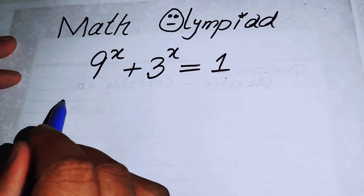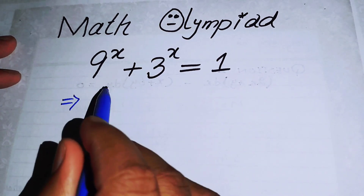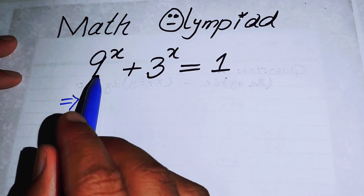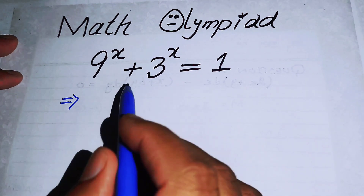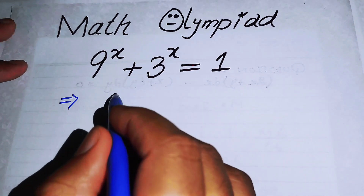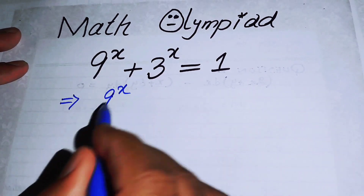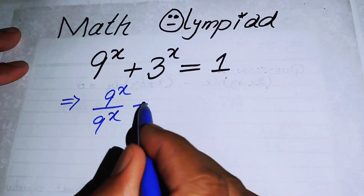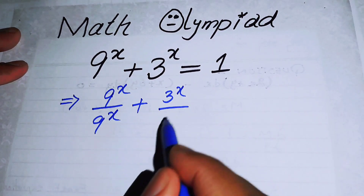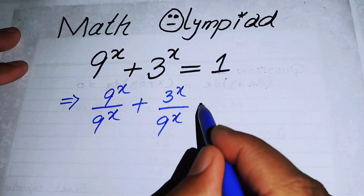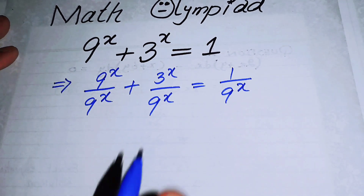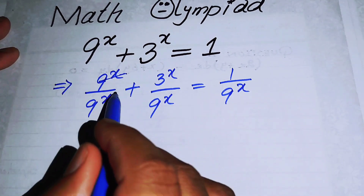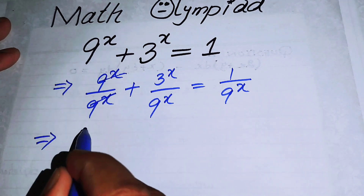The very first thing we are going to do is rearrange the terms. We have 9 to the power of x, and we will divide each side by 9 to the power of x, so that the expression becomes: 9^x over 9^x plus 3^x over 9^x equals 1 over 9^x. The first term cancels to give 1.